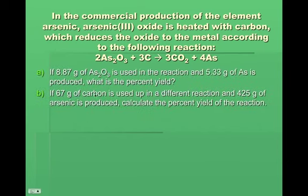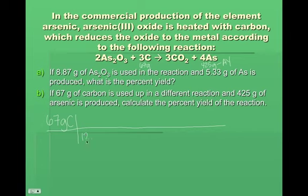And then I got one more example here for you guys. And that is if 67 grams of carbon is used up in a different reaction. So we have 67 grams of carbon used up in a different reaction and 425 grams of arsenic is produced, calculate the percent yield. So same situation, but now we're starting with the carbon instead of the arsenic 3 oxide, but it is the same situation, the same procedure. You start with the amount of reactant. This is how much of the arsenic was produced. So this again is my actual yield and I need to calculate my theoretical yield.